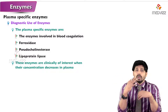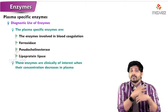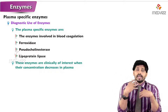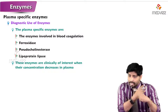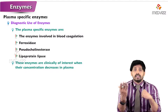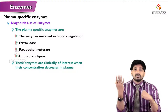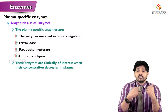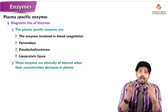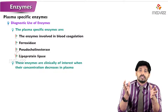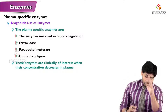Plasma specific enzymes are always present in plasma, and their higher concentrations are mandatory to maintain normal functioning. For example, anticoagulants are supposed to be present in the circulation to prevent clotting. If their concentration decreases, there are chances of clotting, which obstructs normal flow of circulation and causes disorders.